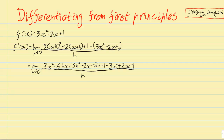Now what I want to try to do is get some cancellations going. Any term without an h in it is what I want to cancel, so that I can then get rid of the denominator. I've got 3x² minus 3x², a minus 2x and a plus 2x, and a plus 1 and a minus 1 — so I can cancel all of those. Now every term I've got left has got an h in it, so I can cancel out one of those as well — there's an h there, there, there, and there.